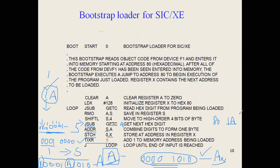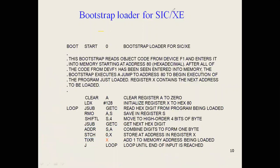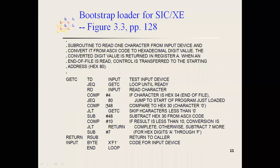This loop continues: at location 81, the next two characters are read from device F1, combined, and stored. This repeats until the end of file is reached. When the character read matches hash 4 (end of file), the loader jumps to address 80 and starts executing the OS program that has just been loaded into main memory.